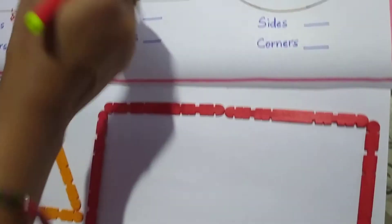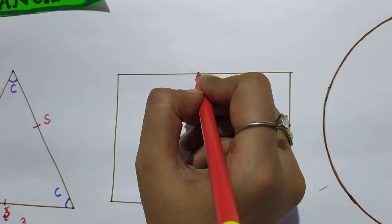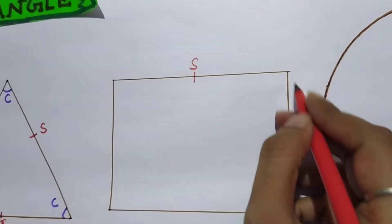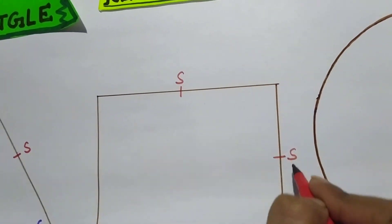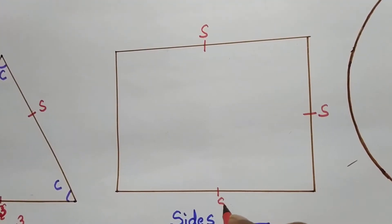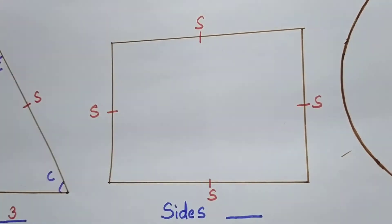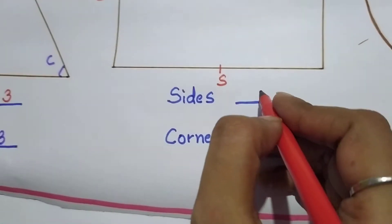Let us count from the figure also. We will count this side. One, this one, two, this is three and this is four. So in a rectangle how many sides are there? Four.